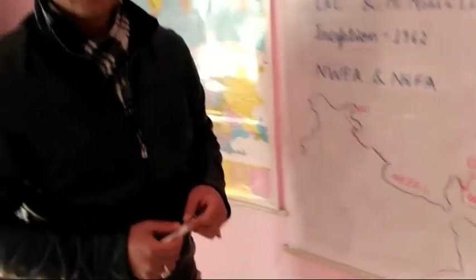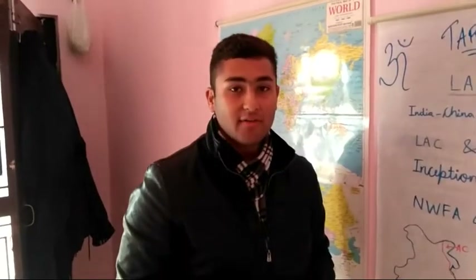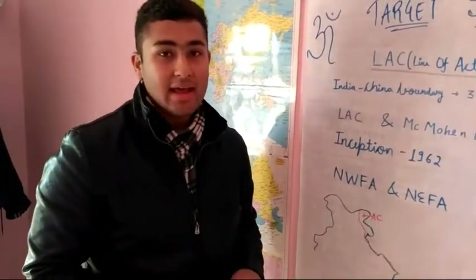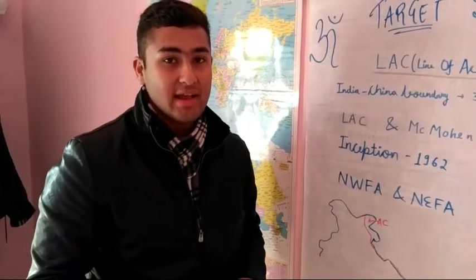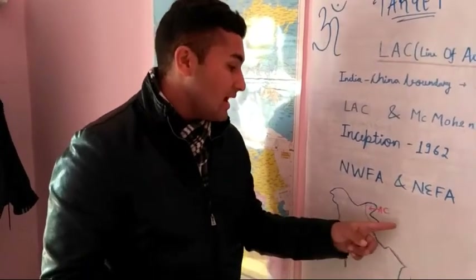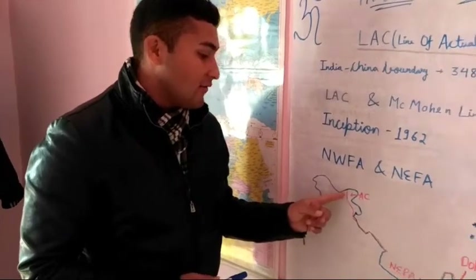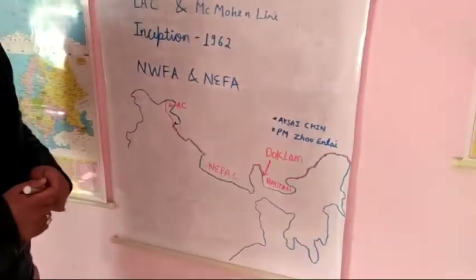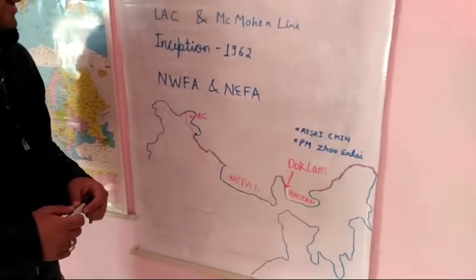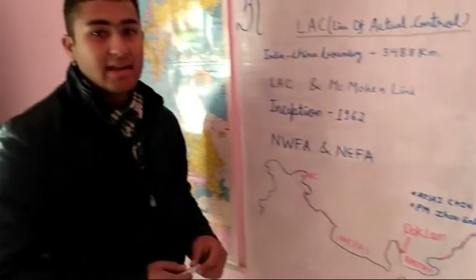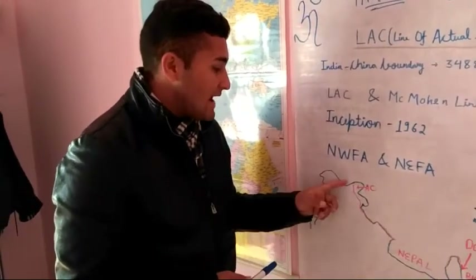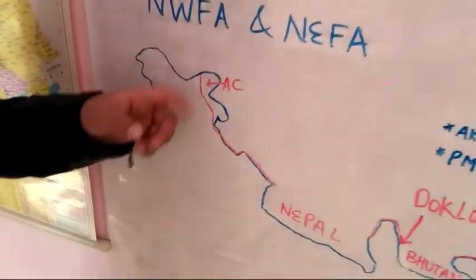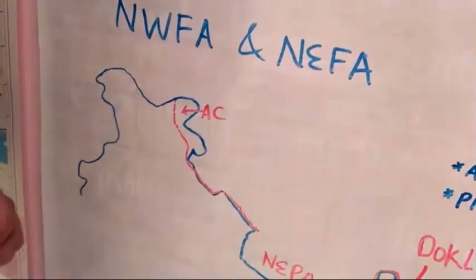After that war came to an end with the defeat of India, the Line of Actual Control was used as an informal boundary between India and China for ceasefire. After that, a treaty was signed between India and China in the year 1993, in which the Line of Actual Control was formally recognized as a boundary separating both the countries.